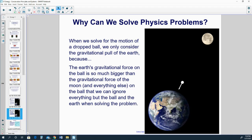When we solve for the motion of a dropped ball, we only consider the gravitational pull of the earth because the earth's gravitational force on the ball is so much bigger than the gravitational force of the moon and everything else on the ball that we can essentially ignore everything. They're negligible. So we can ignore everything but the ball and the earth when solving the problem.